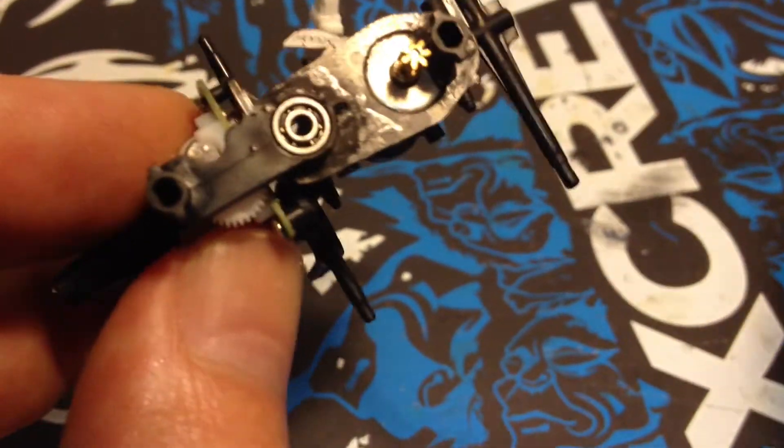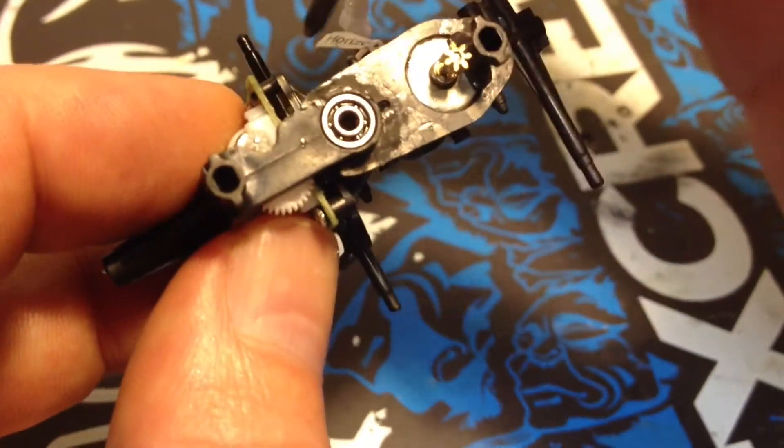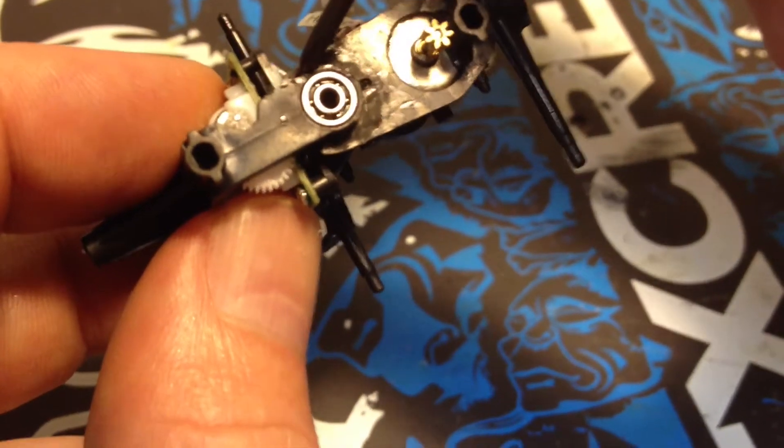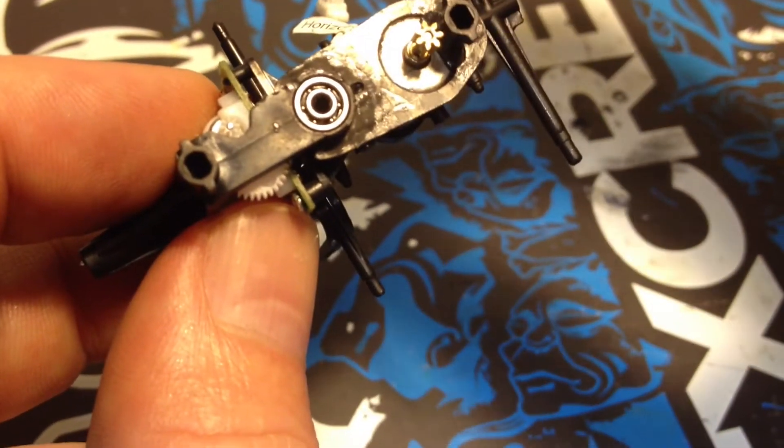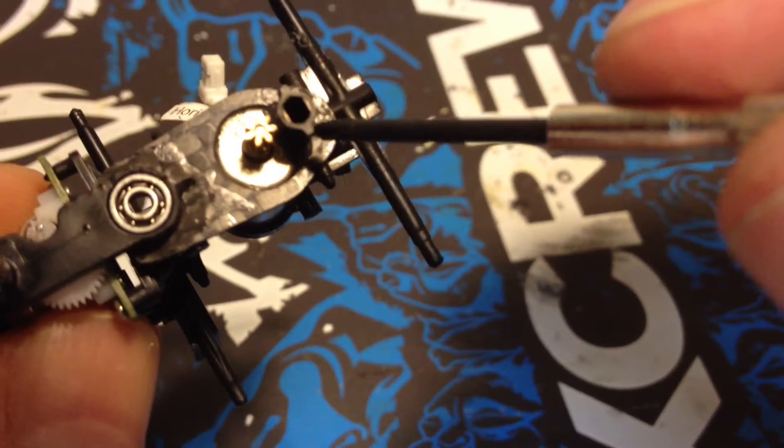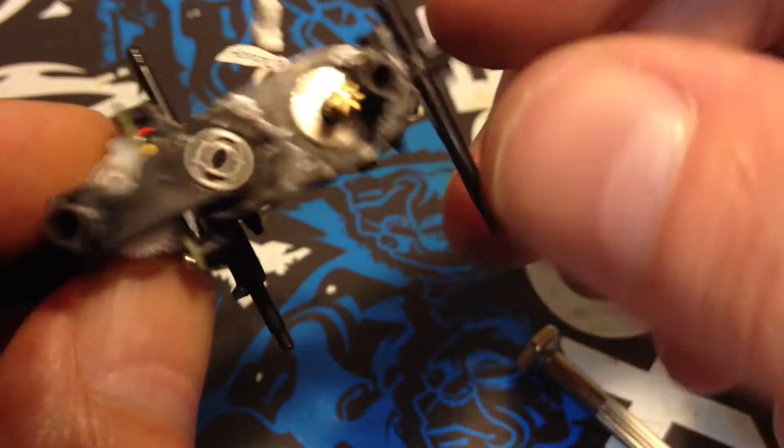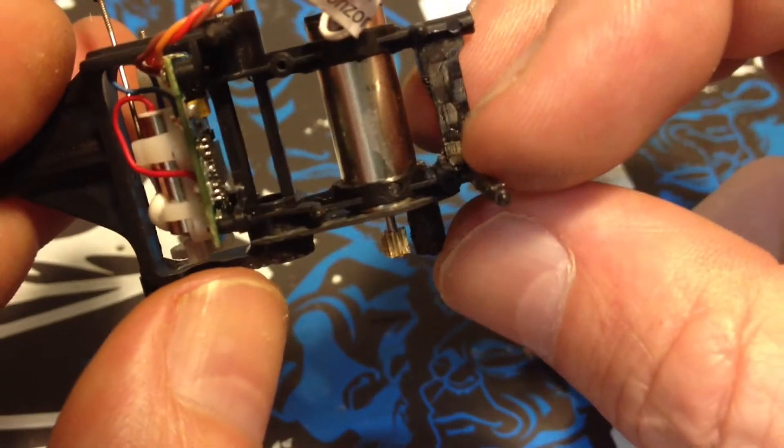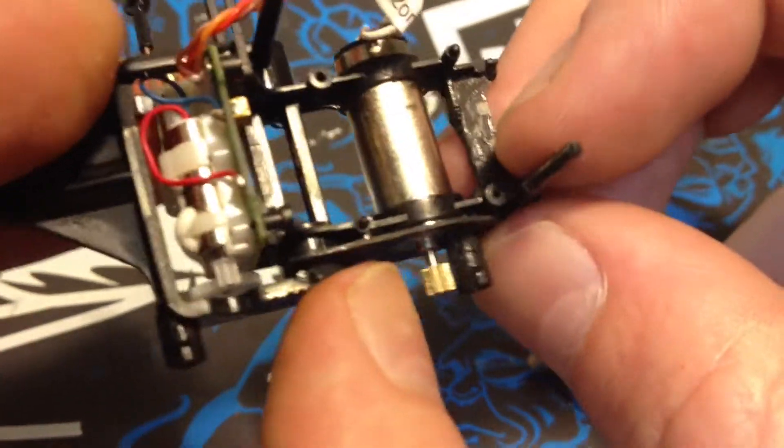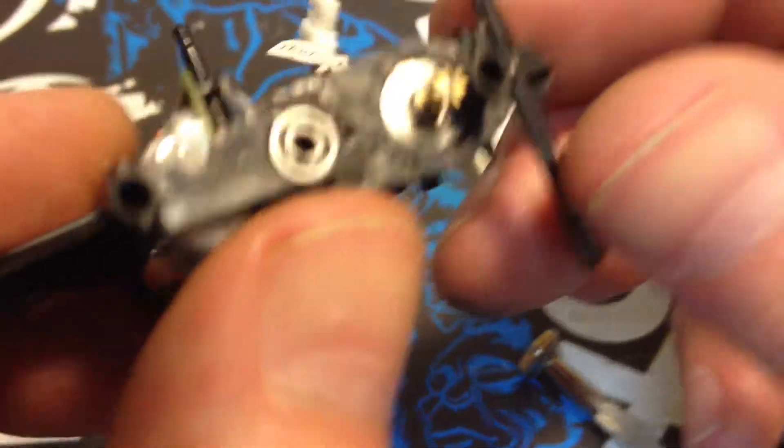Alright, so we have the bottom carbon frame support glued into place. I applied glue all around here on the bottom of this pillar and then on the top of it using the stock motor as a guide as per the instructions.